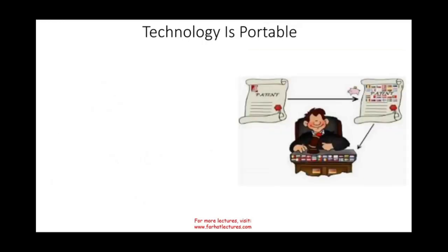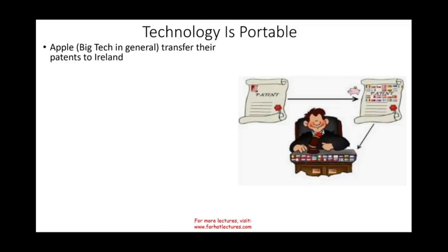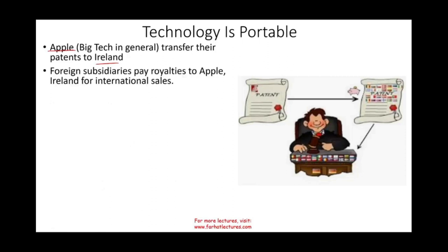Now what's happening in today's world — the economy is much different. Technology is portable. A company like Apple, Google, or Microsoft can transfer their patent somewhere else. For example, Apple transferred many of their patents to Ireland. Then the foreign subsidiaries pay royalties to Apple Ireland for international sales. Therefore, Apple is located in a tax-haven country and all that international income flows there. The government said that doesn't sound right, so they created this concept called global intangible low tax income — GILTI.